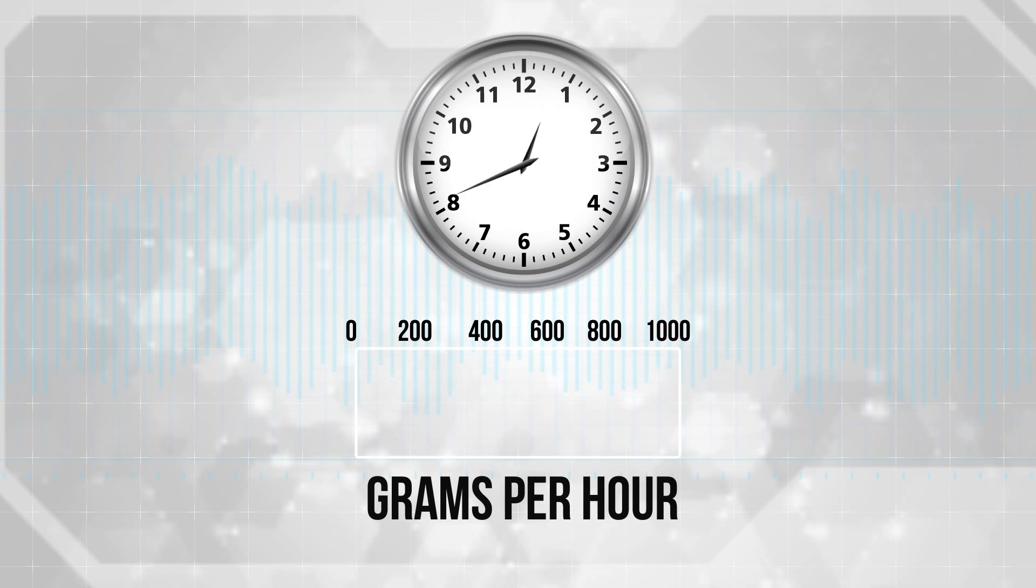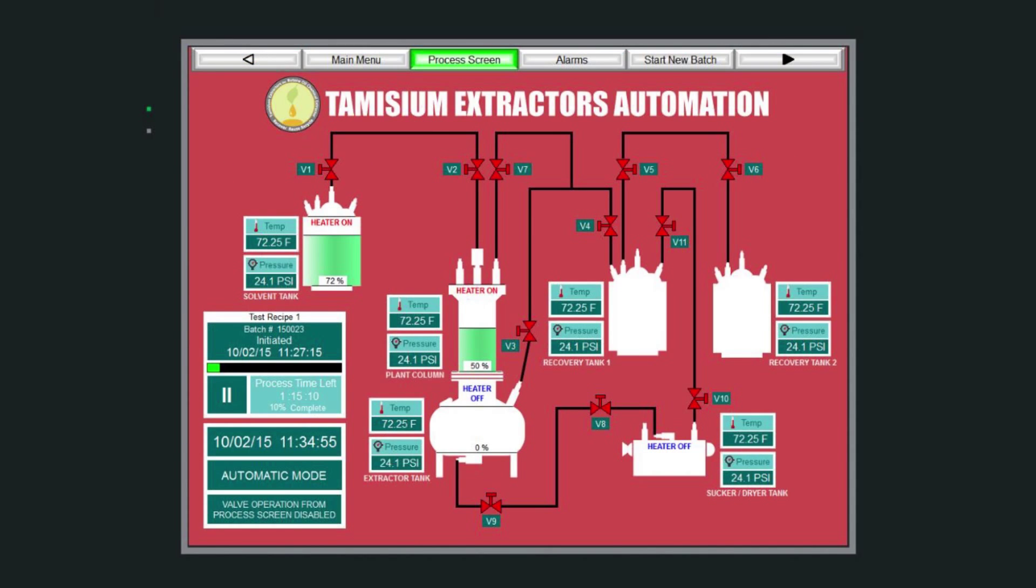The TE-12000 can produce up to 200 grams of targeted extractions per hour of operation and the process can be fully automated.